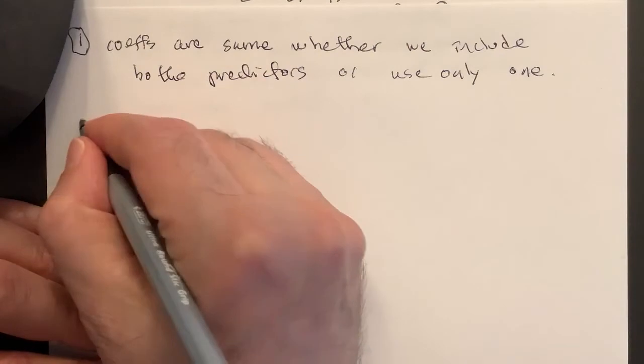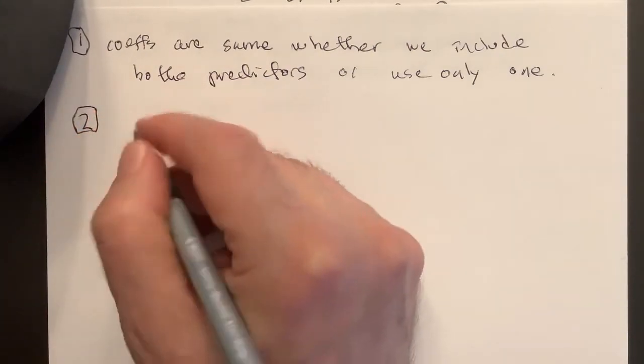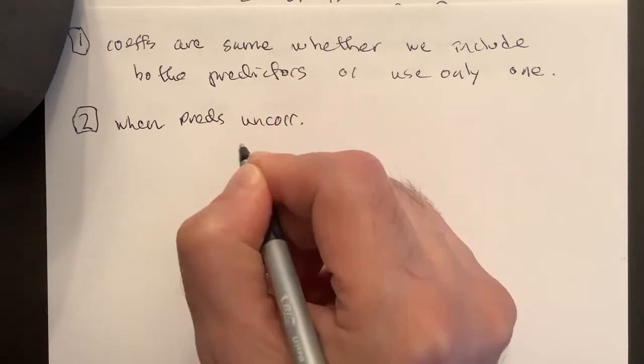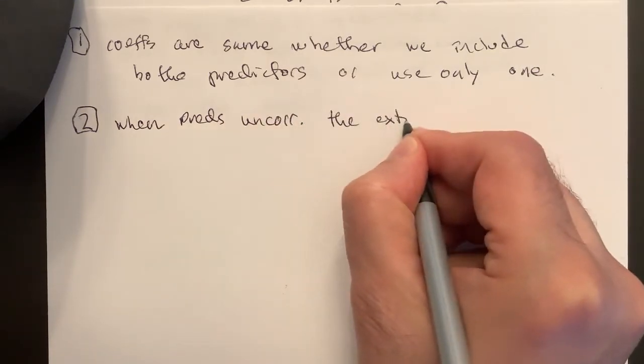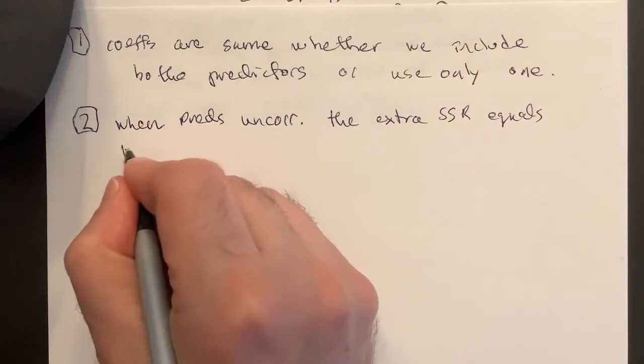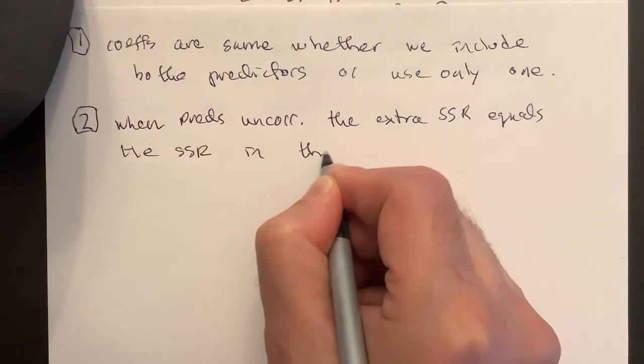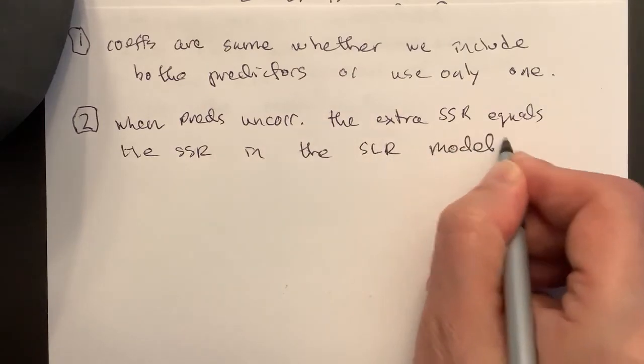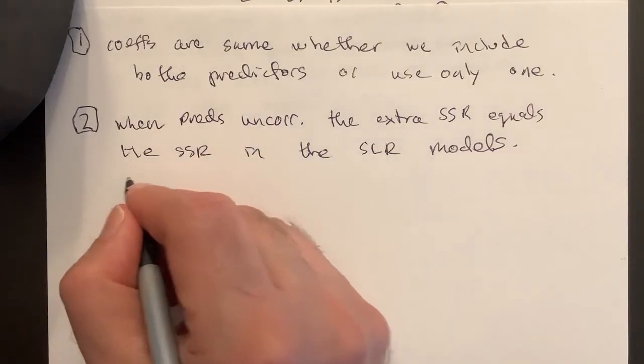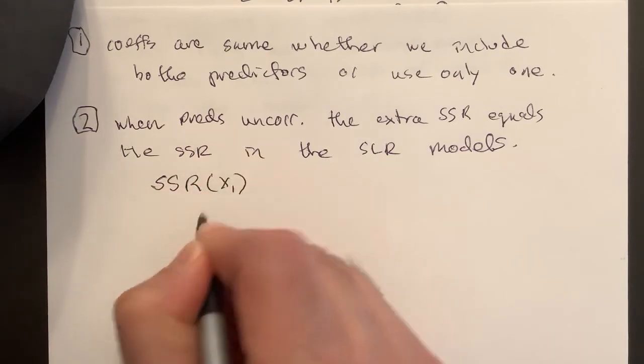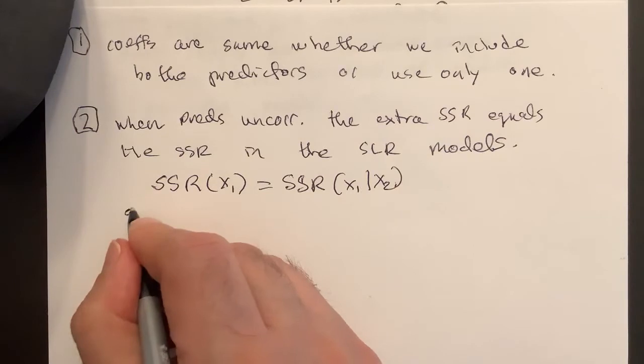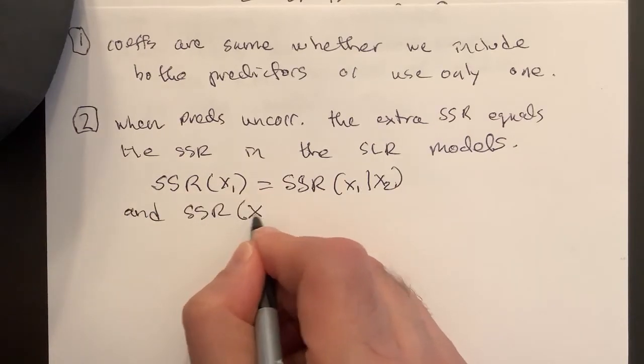Which I won't prove but will show: when predictors are uncorrelated, then the extra sum of squares equals the SSR in the SLR models. So for example, SSR(x1) if I just have x1, this will be equal to SSR(x1|x2), and SSR(x2) will be equal to SSR(x2|x1).